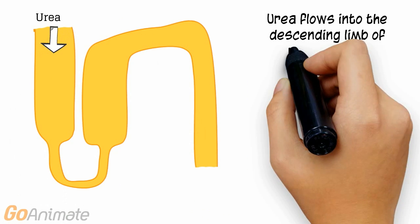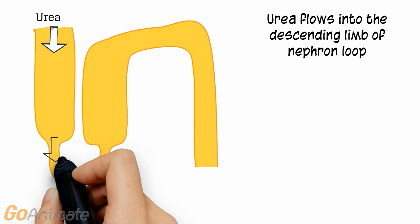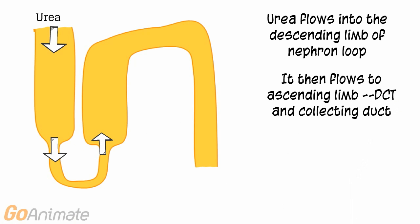Urea cycles through the nephron. Urea flows into the descending limb of the nephron loop, and then to the ascending limb and distal convoluted tubule.